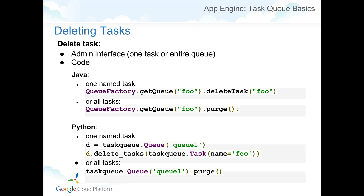To delete a task, there are a couple of ways. One is through the admin interface in the console — you can purge the whole queue or check on individual tasks and delete them. Or you can do it programmatically through code. In Java, you load the queue and delete the task by specifying the task name. If you hadn't given it a task name, you'd need to figure out which task to delete. You could also just purge the entire queue, which deletes all tasks.